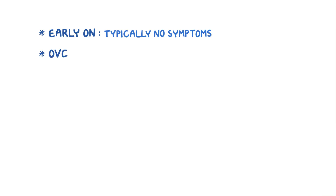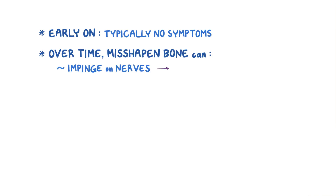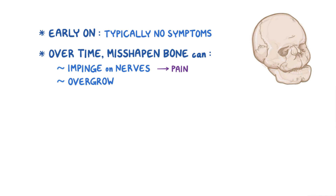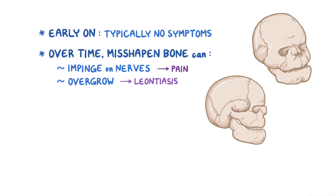Early on, Paget's disease of bone doesn't typically cause symptoms. But over time, the misshapen bones can impinge on nerves and cause pain. In addition, if the skull is involved, the overgrowth of bones can make a person have a lion-like face, which is called leontiasis. The bony overgrowth can also narrow the auditory foramen and impinge on the auditory nerve, leading to hearing loss.